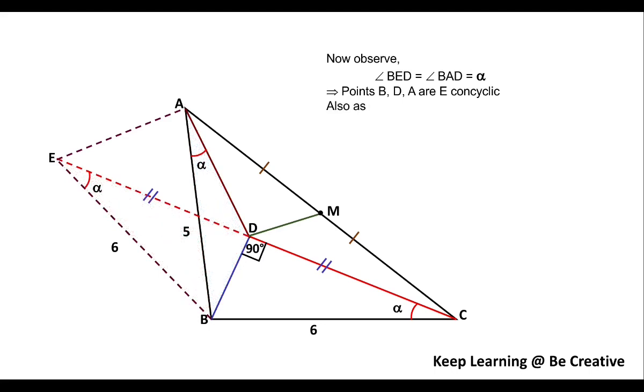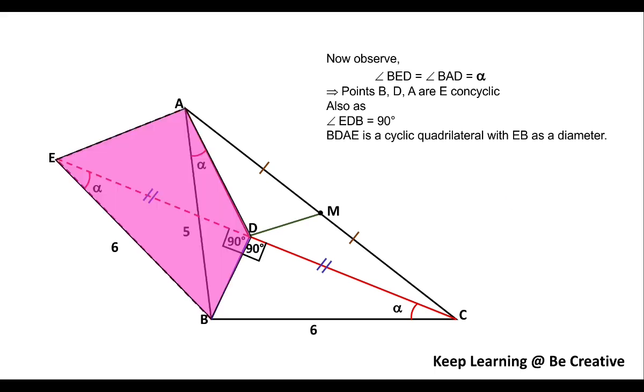Now if they are concyclic, you must have also observed that angle BDE was 90 degrees when we proved these two triangles congruent, and at that time we proved that this angle is 90 degrees by linear pair. So we can also say that this quadrilateral BDAE is a cyclic quadrilateral in which EB is the diameter.